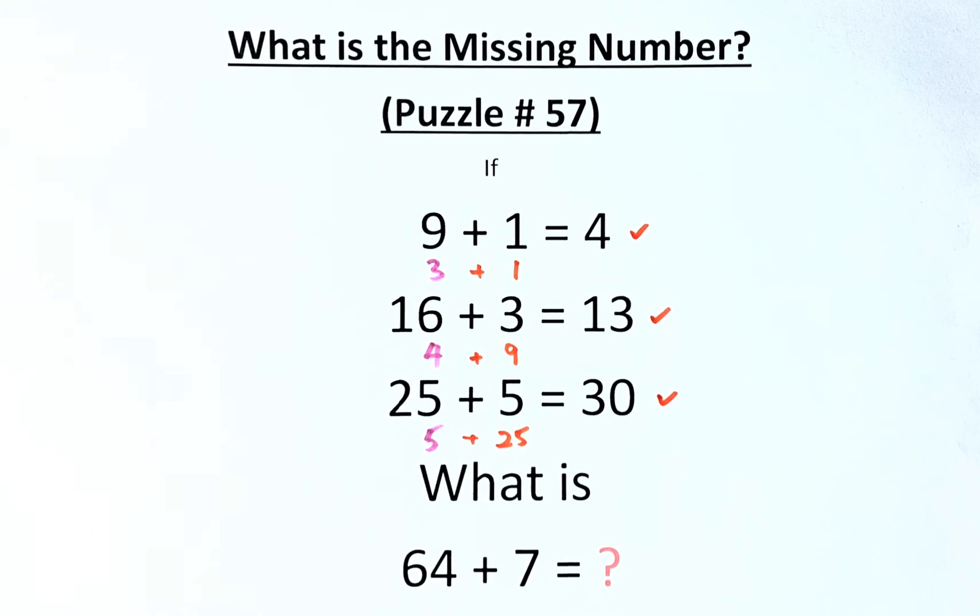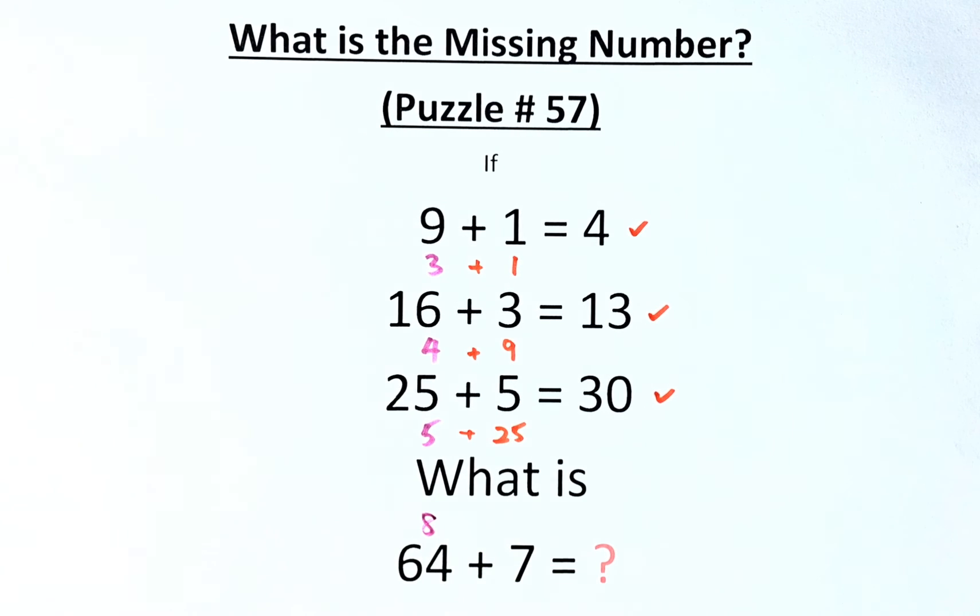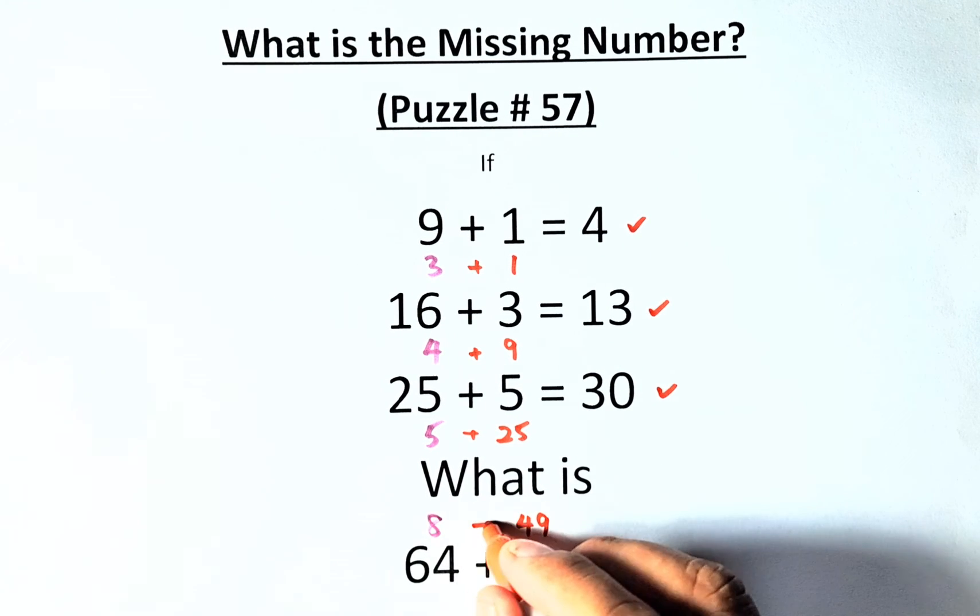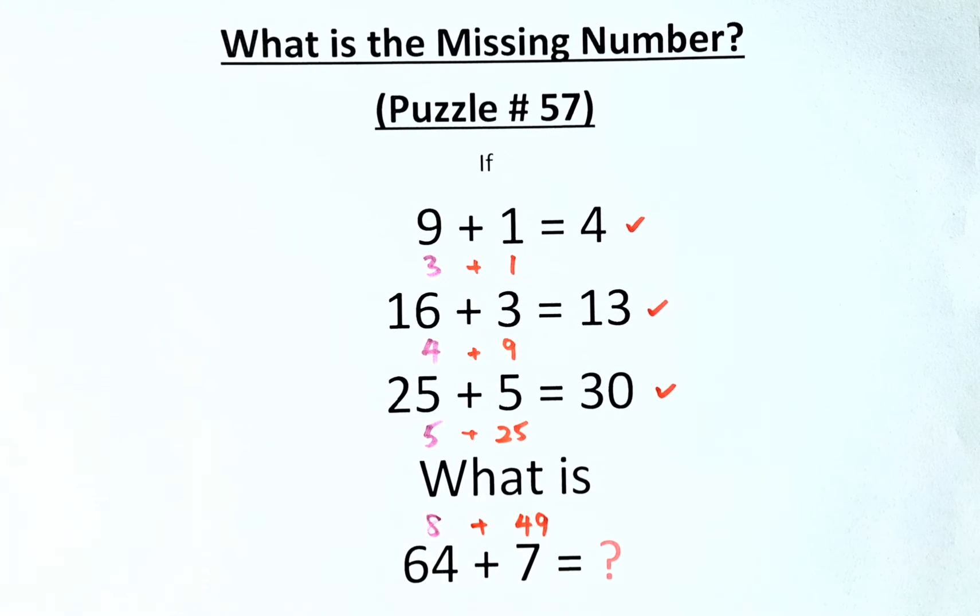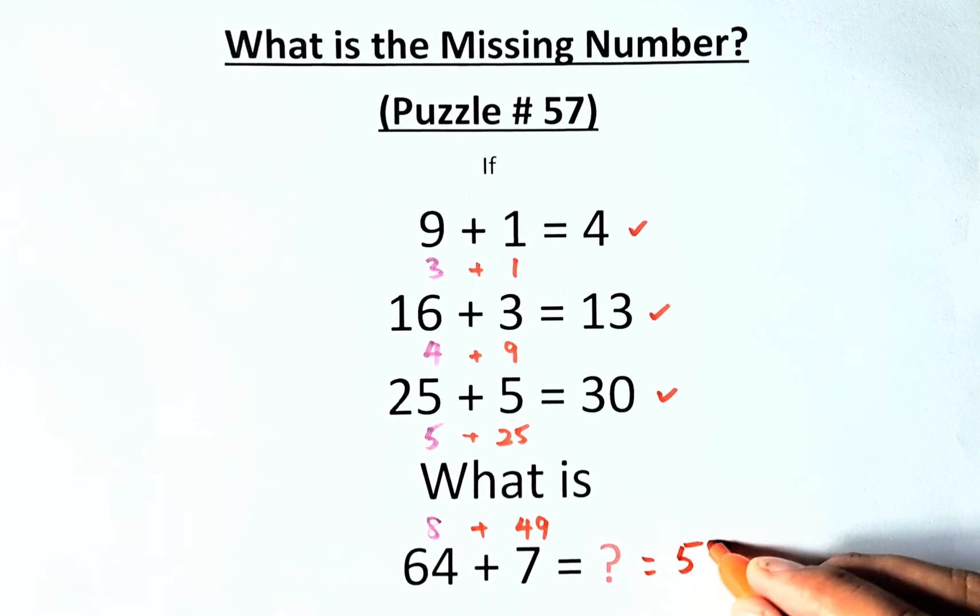So now, what is 64 plus 7? When you square root 64, it becomes 8. When you square 7, it becomes 49. And when you add 8 plus 49, the answer is going to be 57.